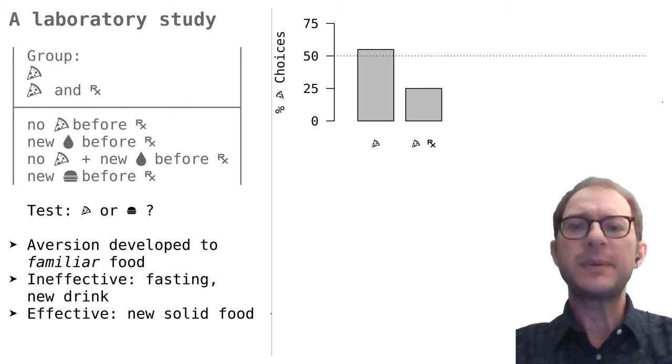Adding more experimental groups to the experiment, Bernstein explored ways in which the aversion could be prevented. Some rats were not given any food for six hours before the drug, this is the no pizza group in the table. Some rats were given a drink with a new flavor, that's the line with a drop, before taking the drug, and some rats combined these two treatments.